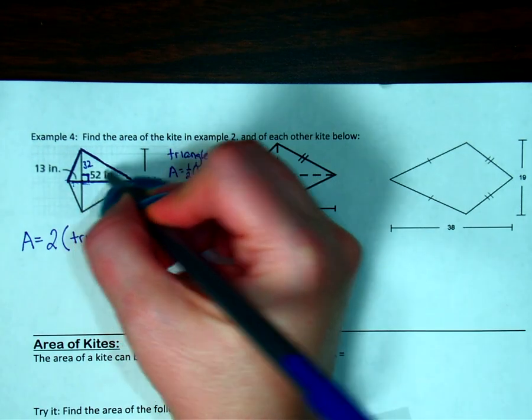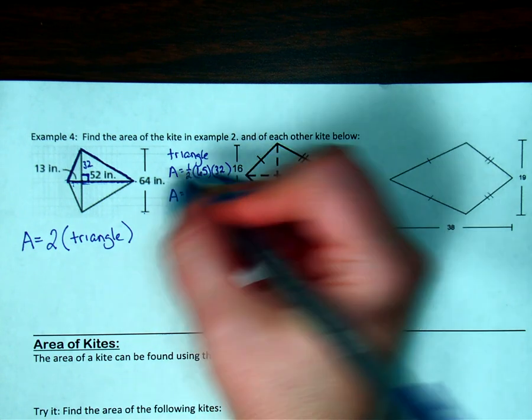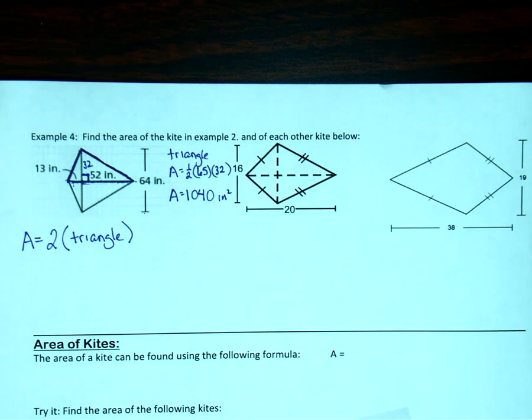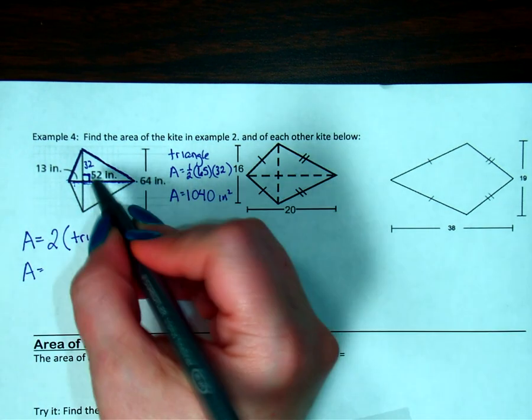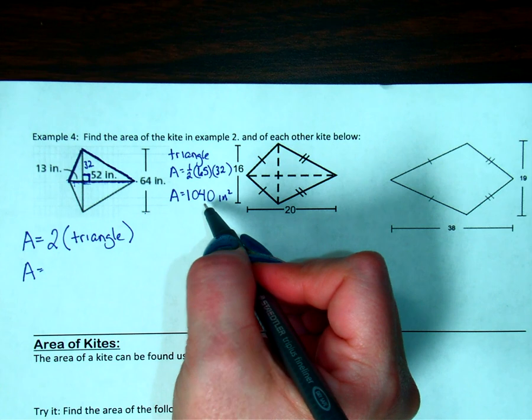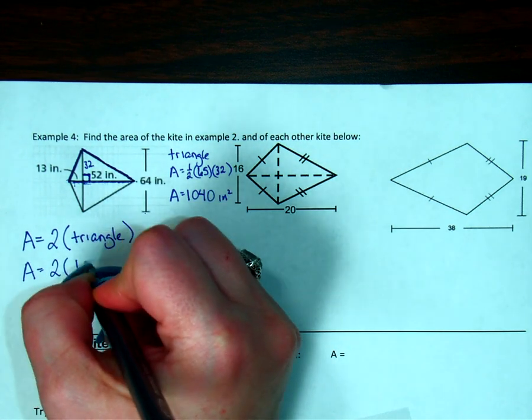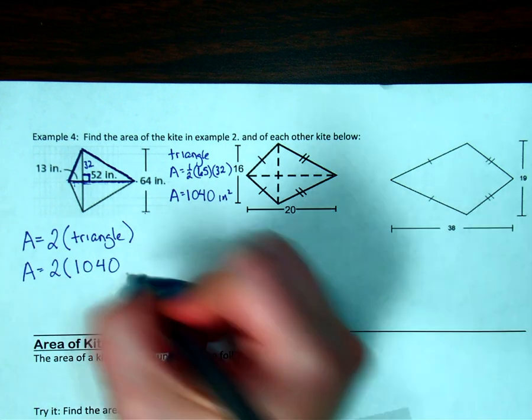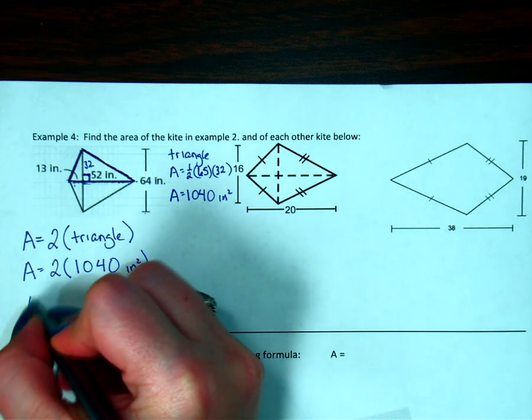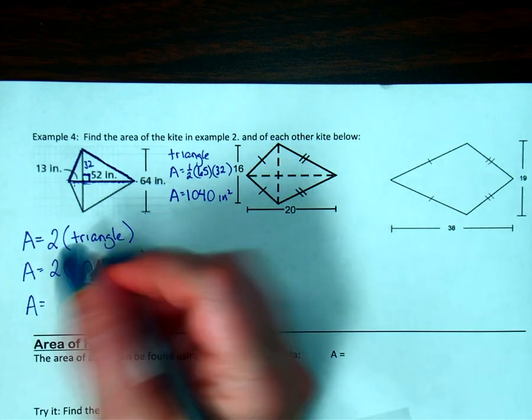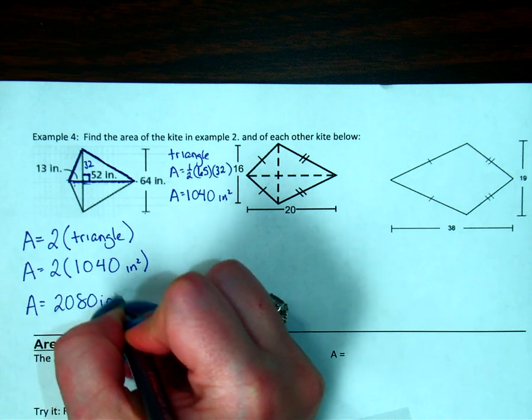Okay, so the area of just the top part is 1,040 and it's inches squared because it's area. My total area then is going to be 1,040 for the top and 1,040 for the bottom. So it's 2 times that 1,040 square inches. So that is going to have an area of 2,080 square inches.